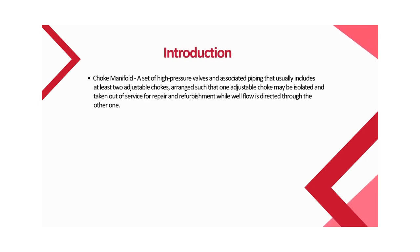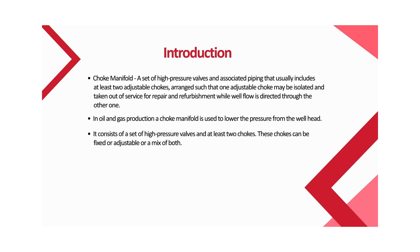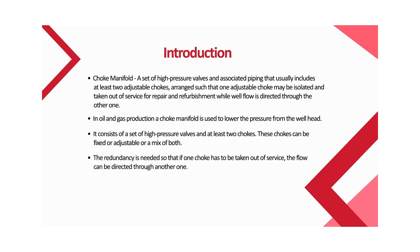A choke manifold is a set of high pressure valves and associated piping that usually includes at least two adjustable chokes, arranged such that one adjustable choke may be isolated and taken out of service for repair and refurbishment while well flow is directed through the other one. In oil and gas production, a choke manifold is used to lower the pressure from the wellhead, and by doing so, the retrieved gases can be flared off on site.